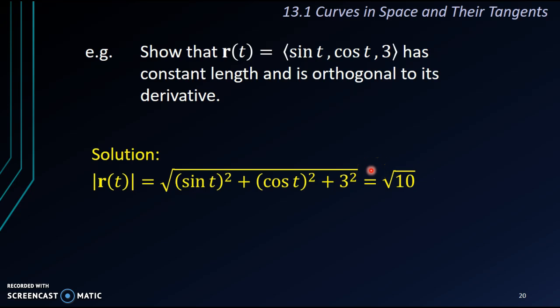When it has constant length, we want to show that it is orthogonal to its derivative. Before we can show it, we have to find its derivative. We'll use v to represent the differentiation of r. We differentiate sin t, we get cos t. We differentiate cos t, we get negative sin t. And we differentiate 3, we get 0.